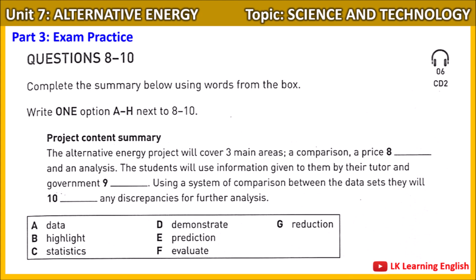So our project is going to cover three main areas. Firstly, comparing the main forms of alternative energy — solar, wind, wave, and biofuels — in terms of production costs. Secondly, we'll take solar energy as an example and do a cost prediction. And lastly, we'll analyze whether they're likely to replace traditional fossil fuels in the future. That sounds like a comprehensive project with a good focus.